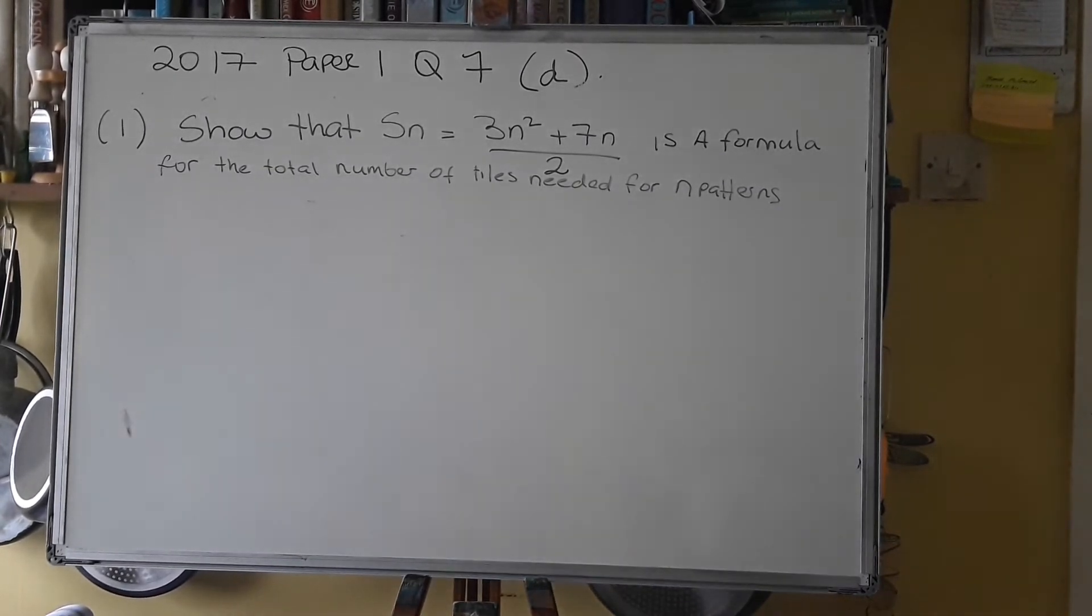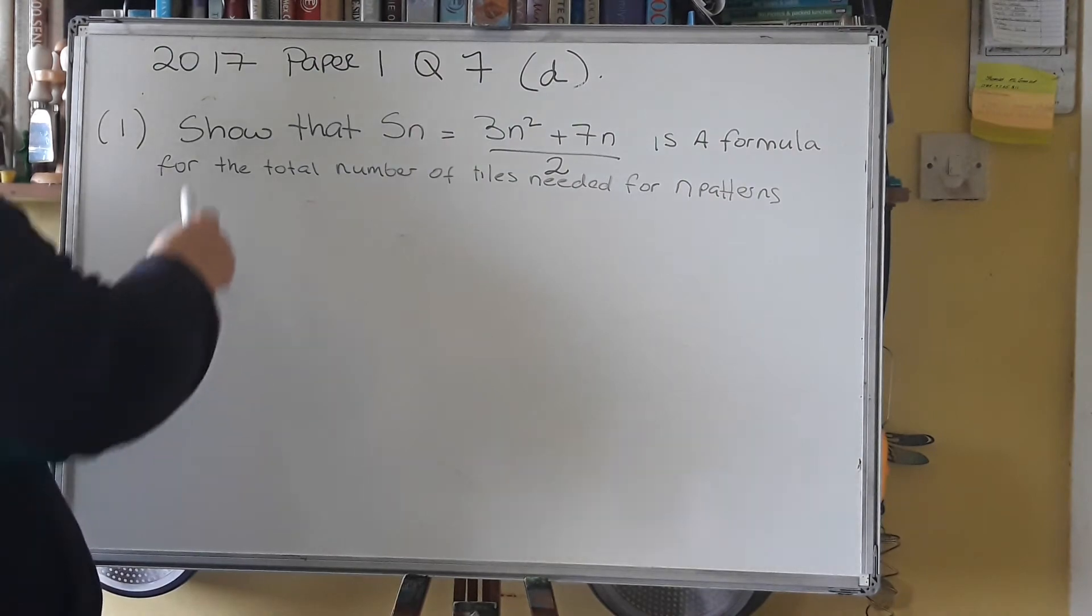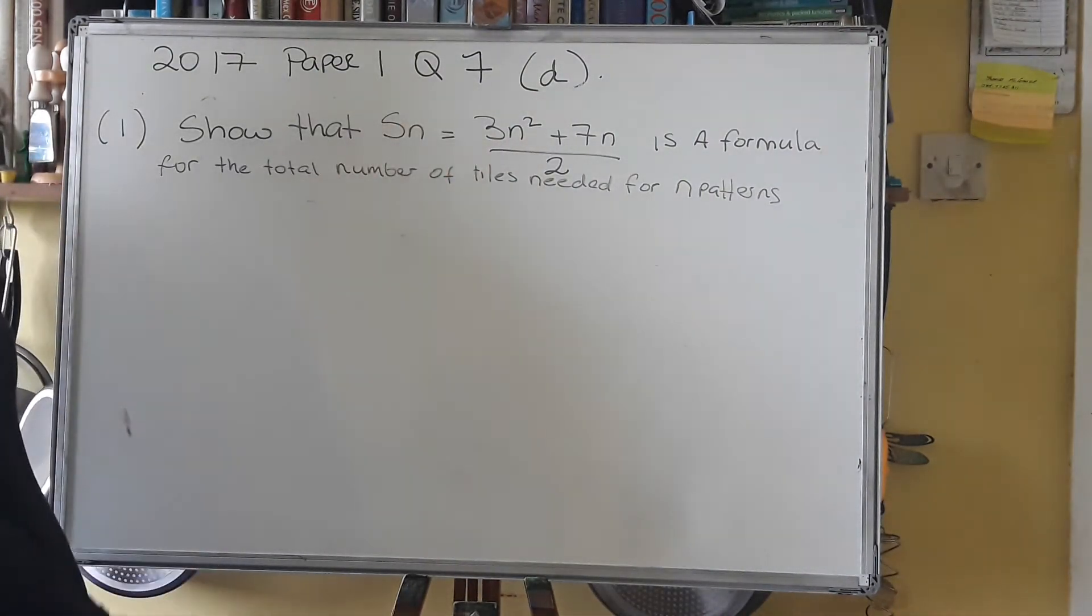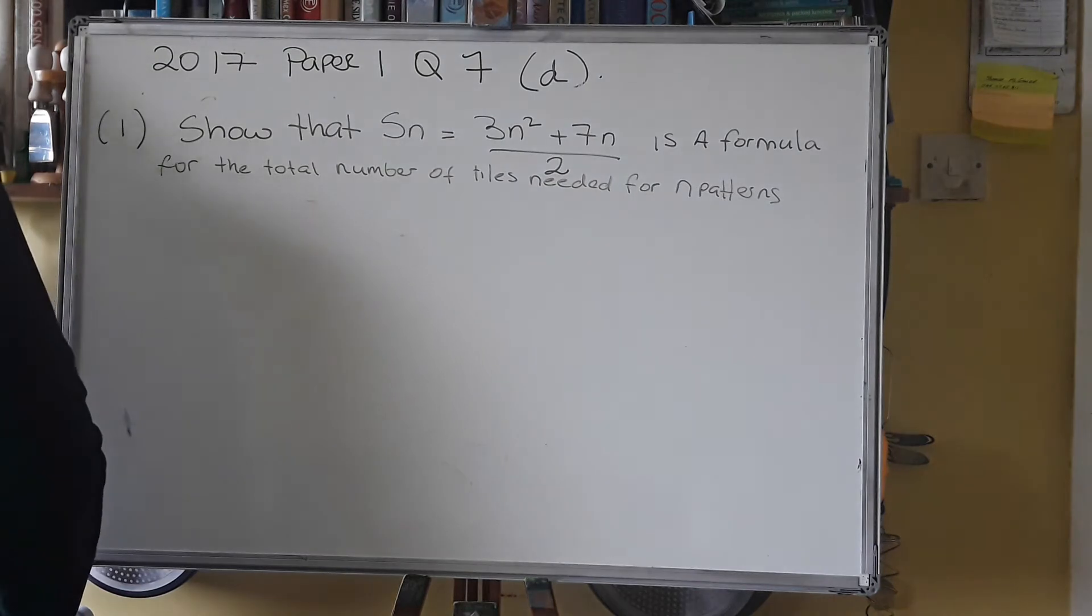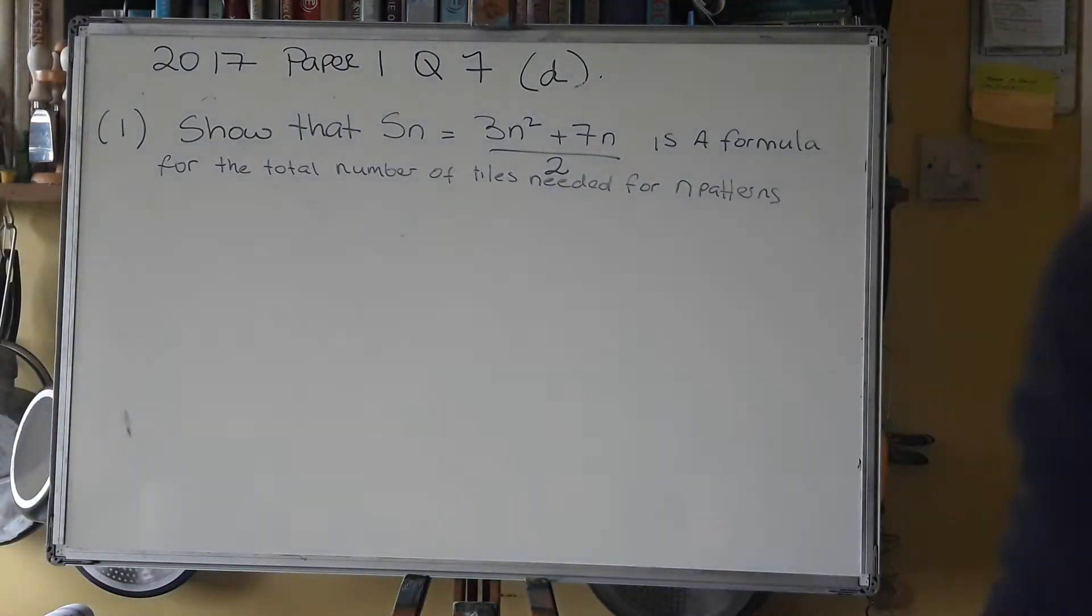So part D and part 1 of part D showed that Sn equals 3n squared plus 7n over 2. That is a formula for the total number of tiles needed for the first n patterns. Pause it, have a go of it and press play to see the solution. Now for this one, we need to go to our maths formula.